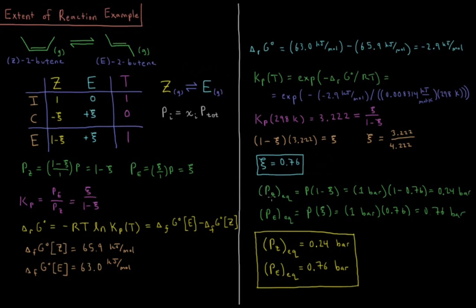The equilibrium pressure of the Z isomer is P times (1 minus C), which is 1 bar times (1 minus 0.76), giving 0.24 bar. For the E isomer, the final pressure is C times the total pressure, so 1 bar times 0.76 equals 0.76 bar. Using the stoichiometry of the reaction to build an ICE table, then using standard Gibbs energies of formation to find the equilibrium constant and solve for the extent of reaction, we get Z at 0.24 bar and E at 0.76 bar.